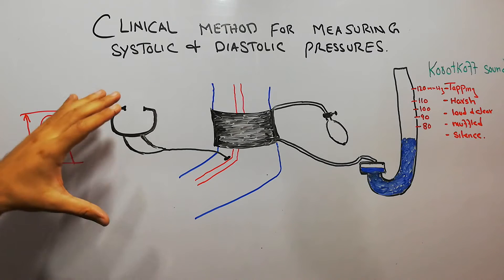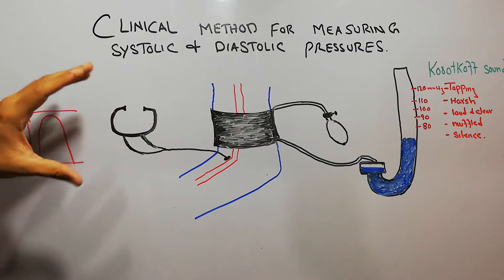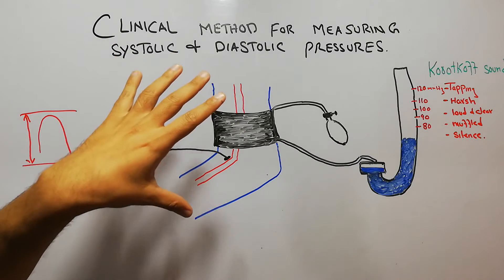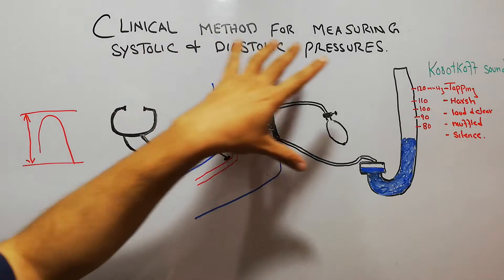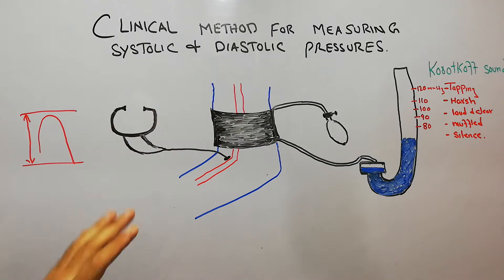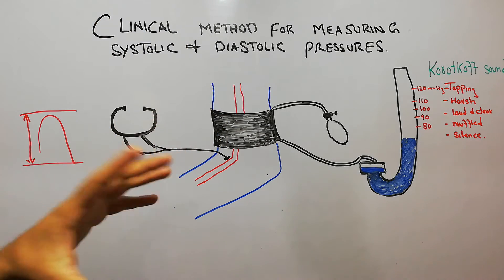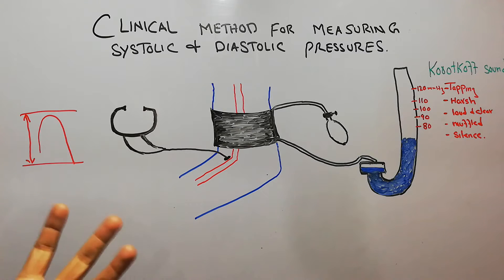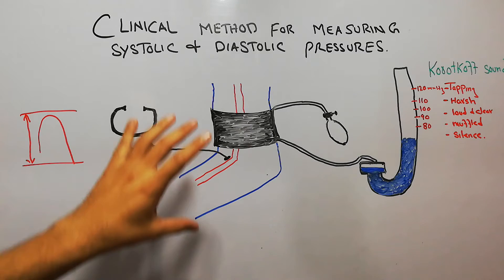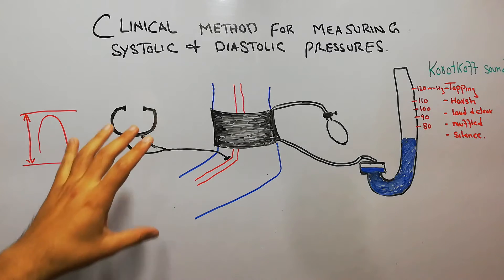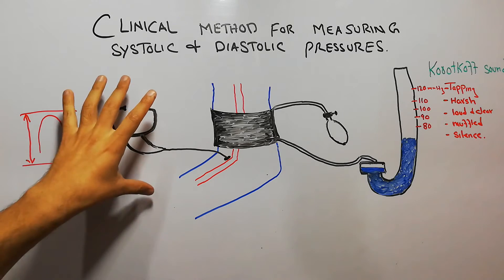It is very important to measure the systolic pressure and the diastolic pressure in a clinical setup. The most common method, which you must have heard about or seen in clinics or homes, is the auscultatory method of measuring blood pressure.